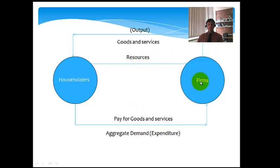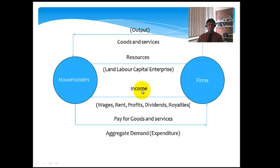Householders provide a whole range of resources for firms. Remember land, labour, capital and enterprise. And these resources need to be paid for. In terms of the income flow, again, it's a monetary flow made up of wages, rent, profits, dividends and royalties.